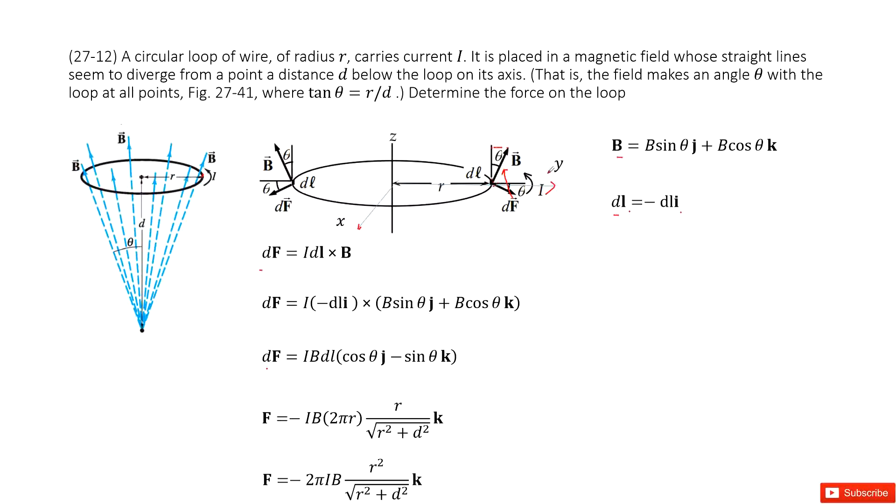Then we look at the j component. We can project this dF into the y component and the negative z component. In the opposite direction there, it also has the y component and z component. This y component can be cancelled for this loop due to mirror symmetry. So we just look at the k component.